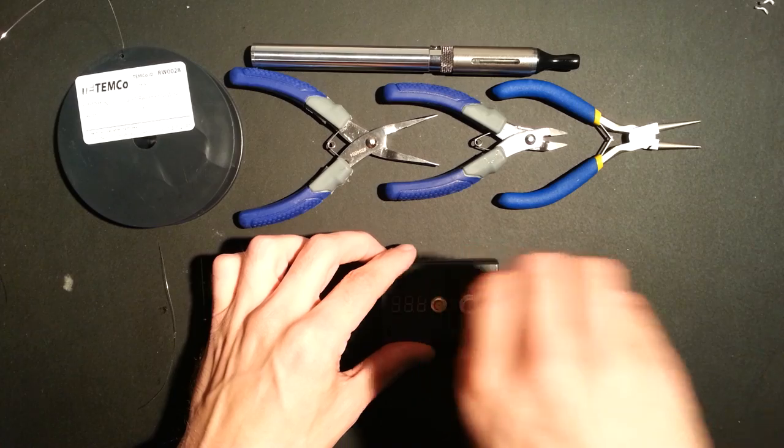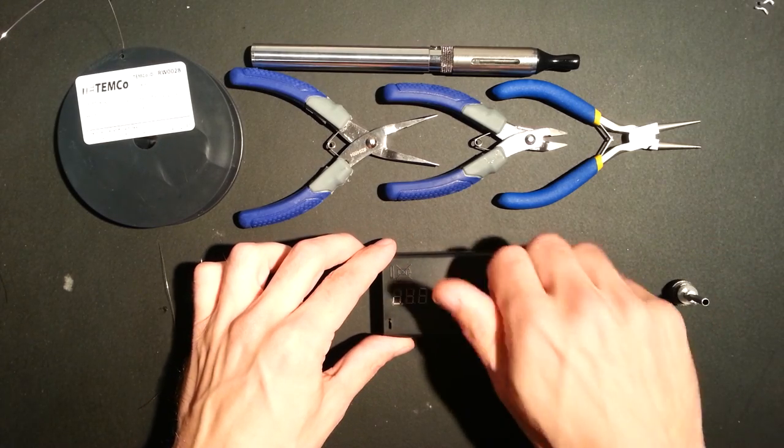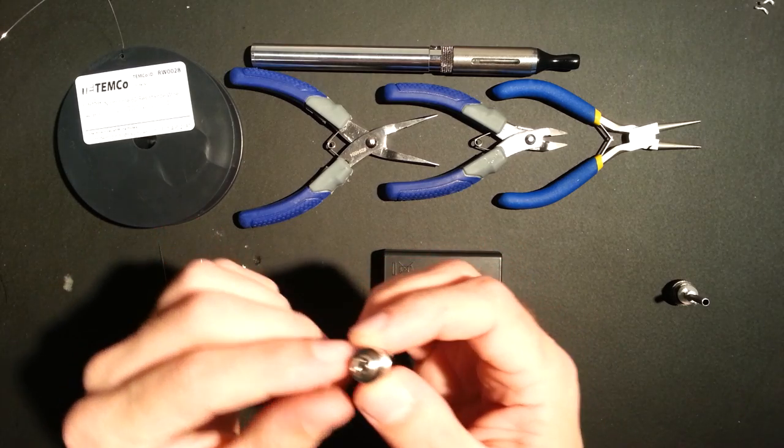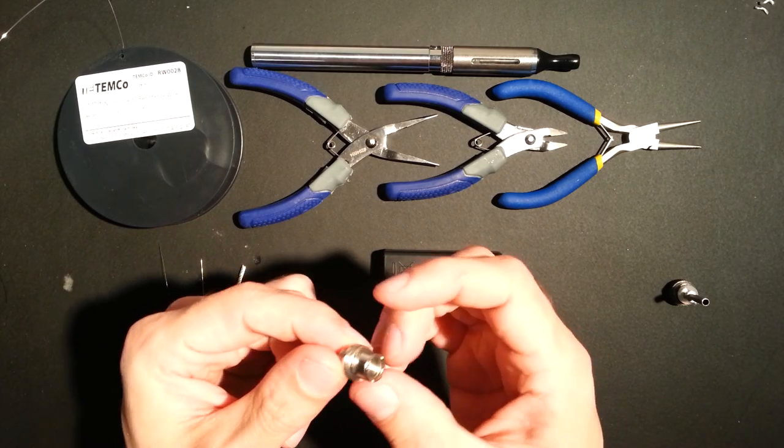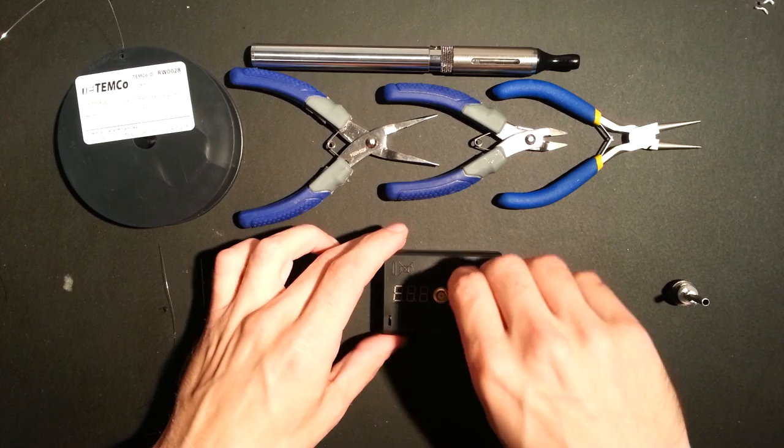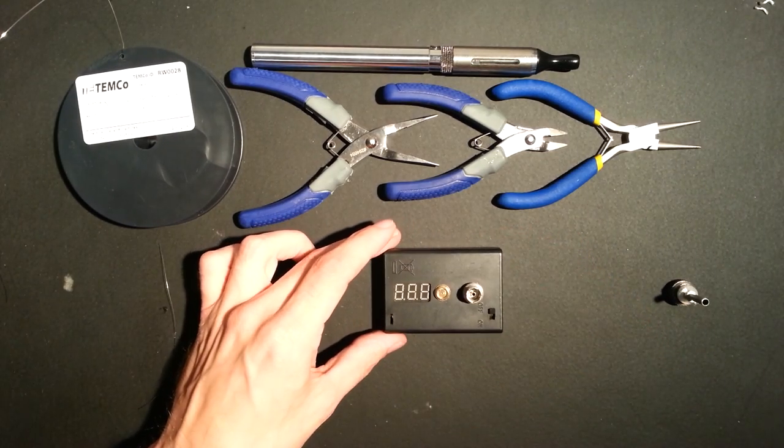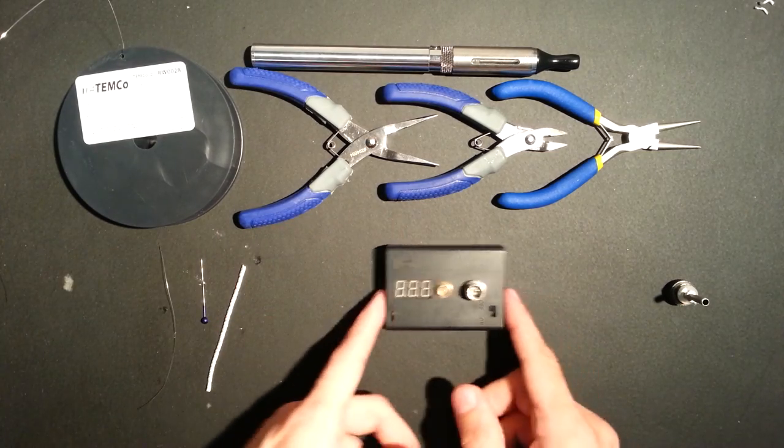You'll need the adapter to fit the Kanger T3 coil heads. This is called an Ego C Atomizer to Battery Adapter. They have them there for just a couple bucks. If you have trouble finding it, feel free to give them a call. Very nice folks.